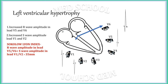The Sokolov-Lyon index is based on this concept. It is the addition of R wave amplitude in lead V5 or V6 and S wave amplitude in lead V1 or V2. If this value is more than 3.5 mV — that is 35 mm with standard calibration — then there is left ventricular hypertrophy.